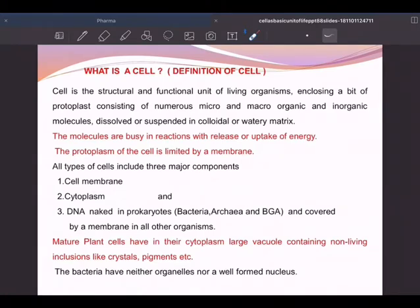The protoplasm of the cell is limited by the membrane, the Lakshman Rekha. All types of cells include three major components: cell membrane, the outermost layer; cytoplasm, cyto means cell, plasm means liquid, the liquid present inside the cell; and inside the nucleus, there are nucleic acids DNA and RNA. DNA is the most important one.